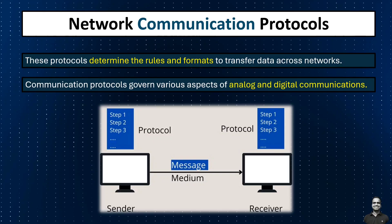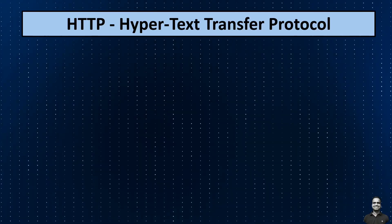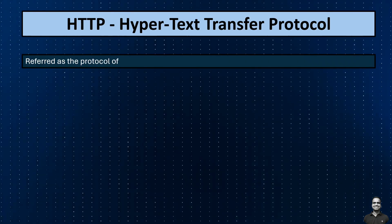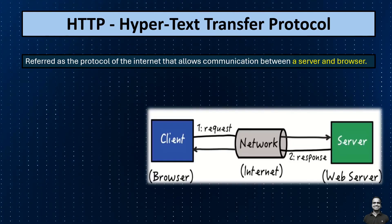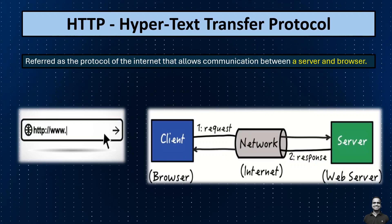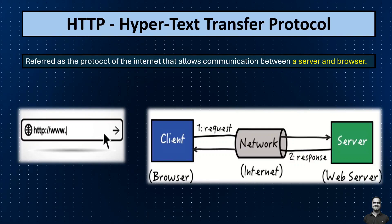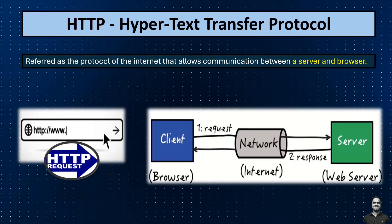Some key network communication protocols include HTTP — Hypertext Transfer Protocol — commonly referred to as the protocol of the internet, that allows communication between a server and a browser. For example, when you type a website URL like www.abc.com into your browser and hit enter, your browser initiates an HTTP request to the server hosting the website, asking for the web page to be displayed.